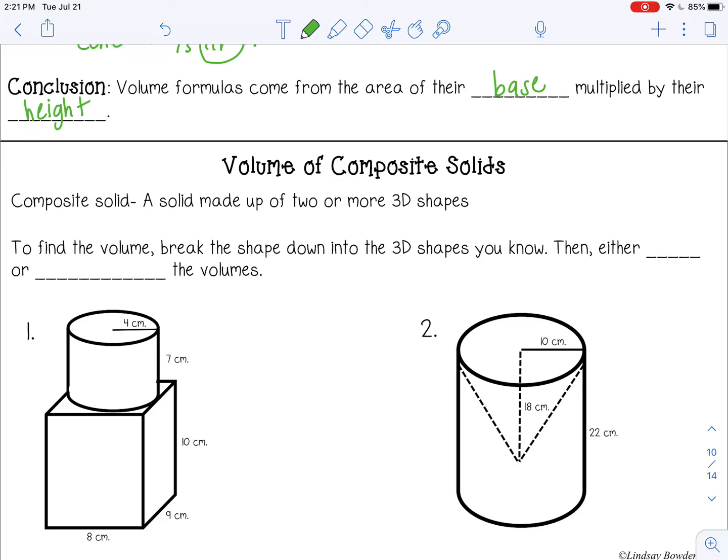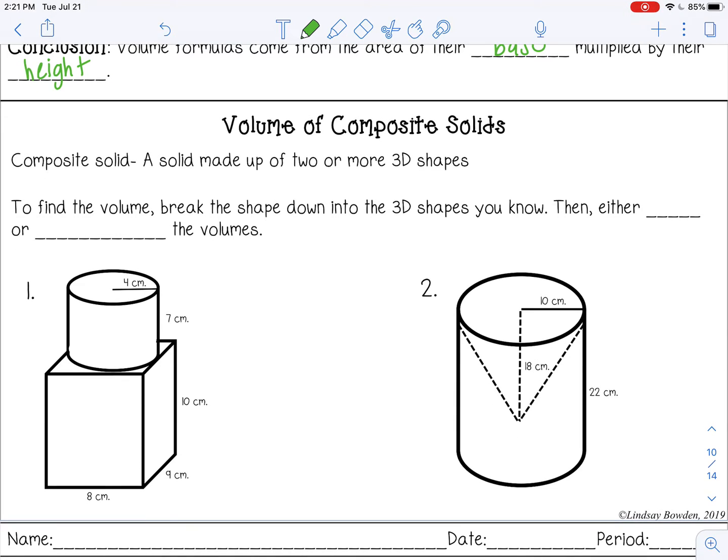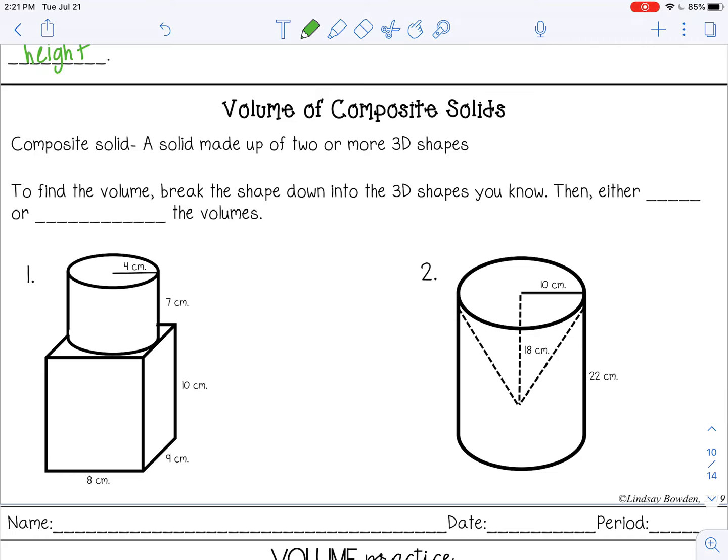The other part of this lesson is going to involve the volume of composite solids. And a composite solid is a solid made up of two or more three dimensional shapes. It's going to have more than one shape stuck together. To find the volume, we're going to break the shape down into three dimensional shapes that we know. Then we're either going to add or subtract the volume depending on what the picture looks like.